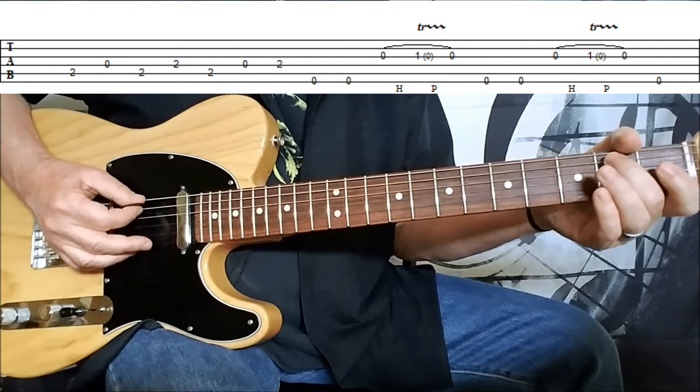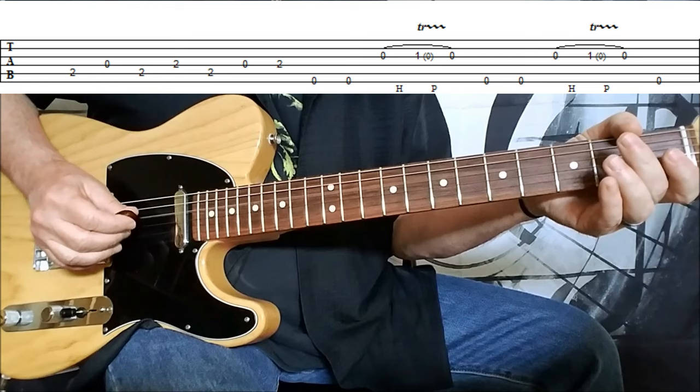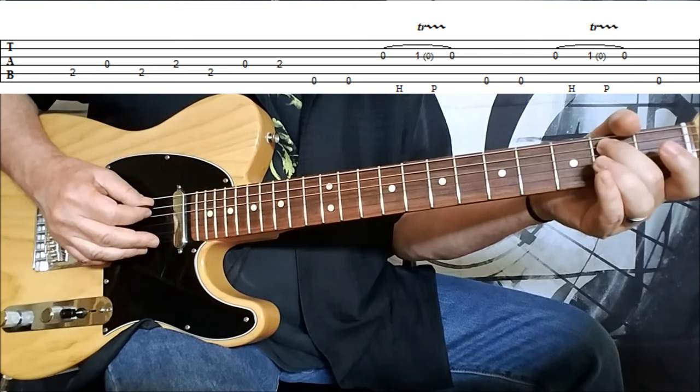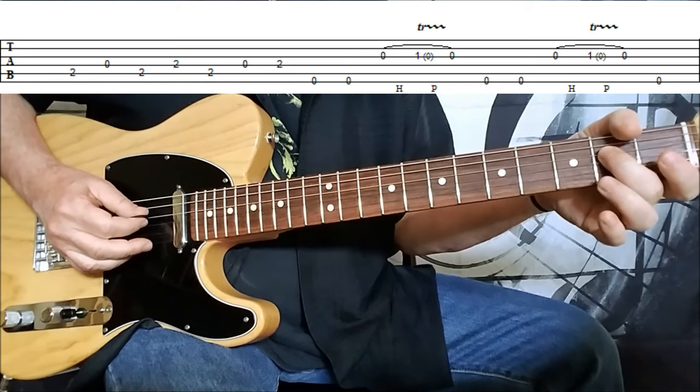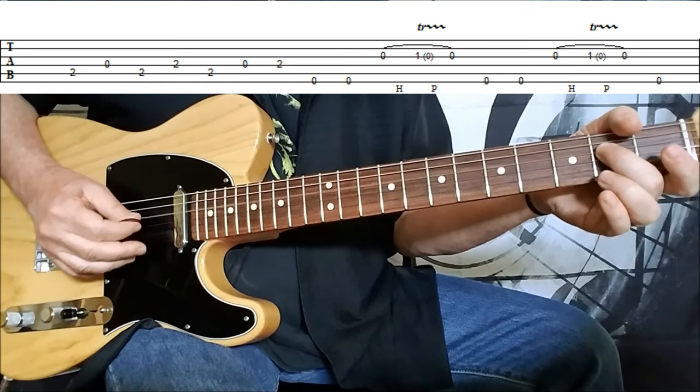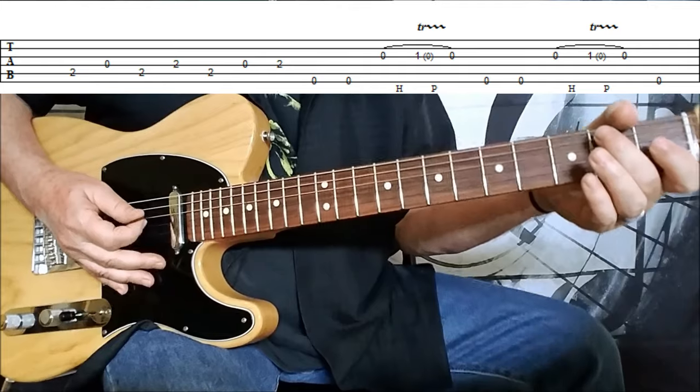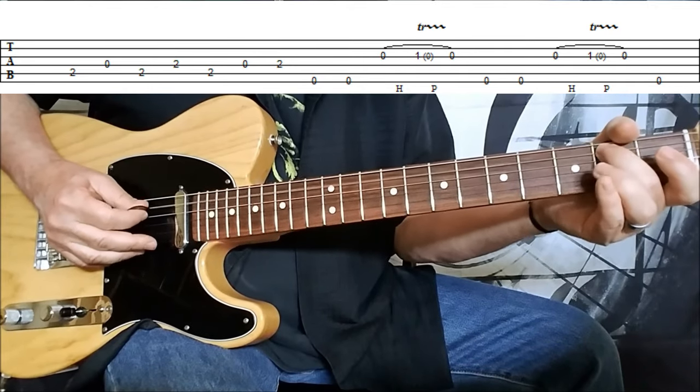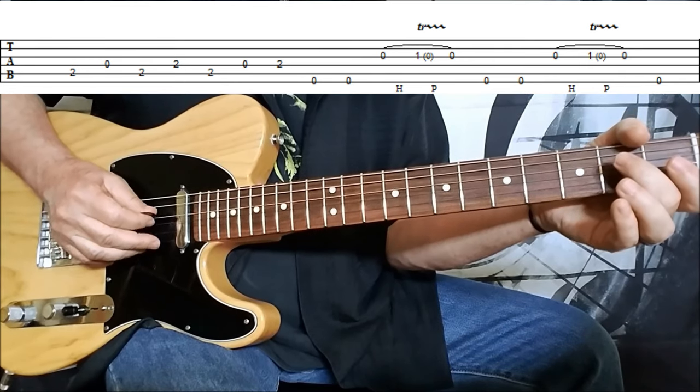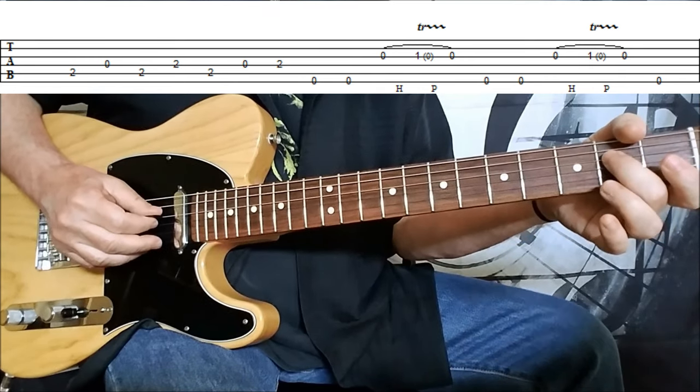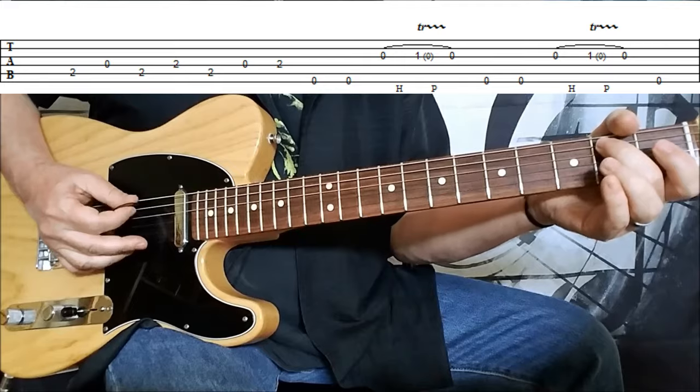We are on the second fret on the A string, and then we hit the open D string, back to the A string at the second fret, and then we go to the second fret on the D string. I'm doing it with one finger right now so you can kind of see it real clearly. Back to the second fret on the A string, D string open again, and then to the second fret on the D string.